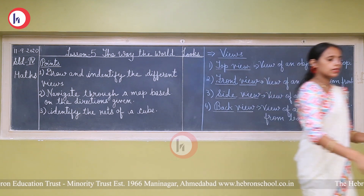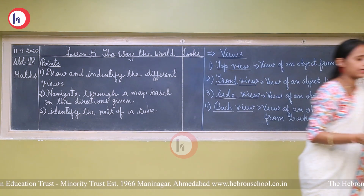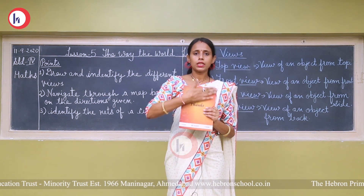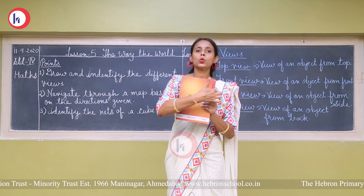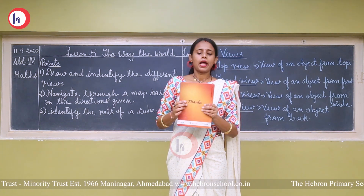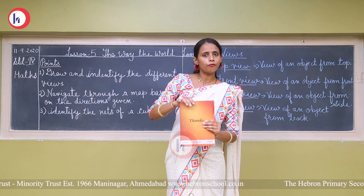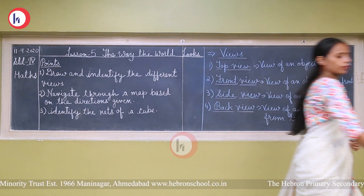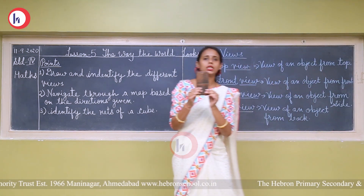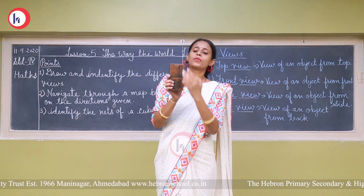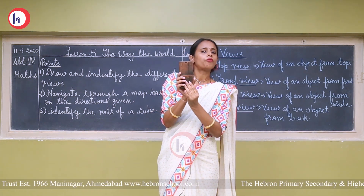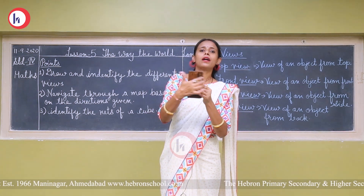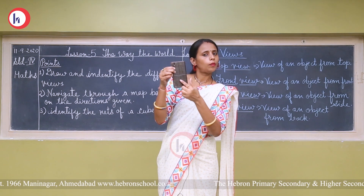Now let's take one more example. This is a book. So this is your front side, these two are side views, this is the top view, and this one is the back view. Now, this is a cell phone — a mobile phone. So this is the front view, this is the top view, these two are side views, and this is the back view.